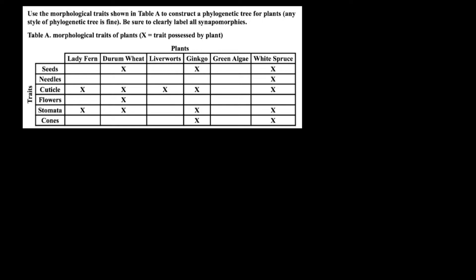So let's read the problem. Use the morphological traits shown in table A to construct a phylogenetic tree for plants. Any style of phylogenetic tree is fine. Be sure to clearly label all the synapomorphies. And here's table A, morphological traits of plants. X stands for the trait possessed by plant.